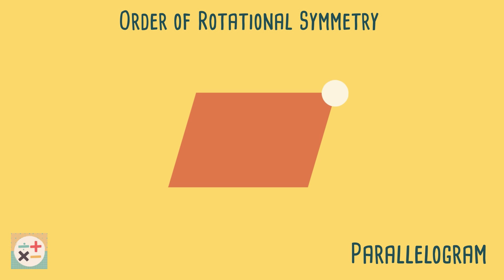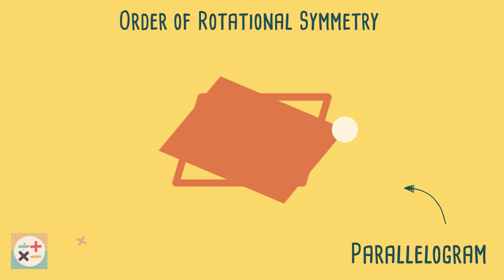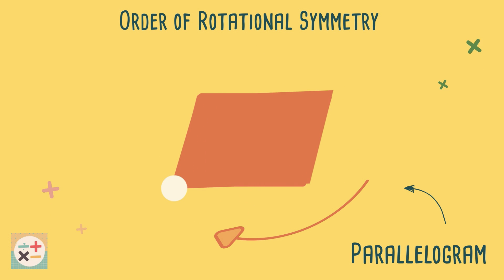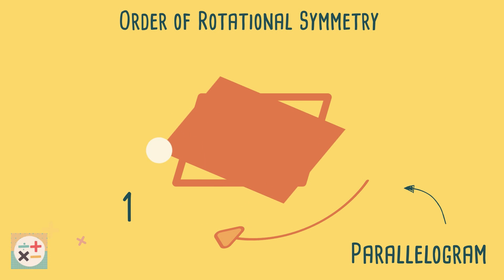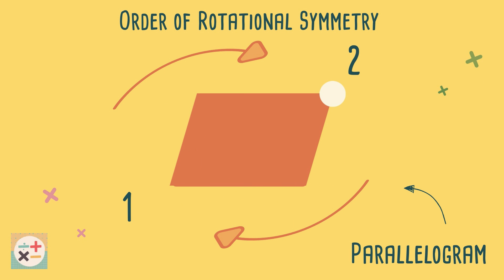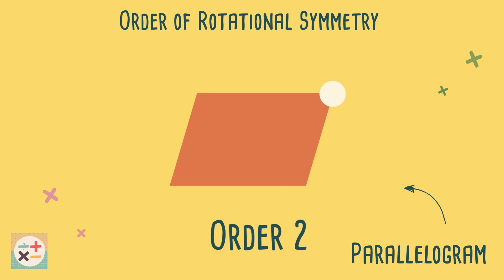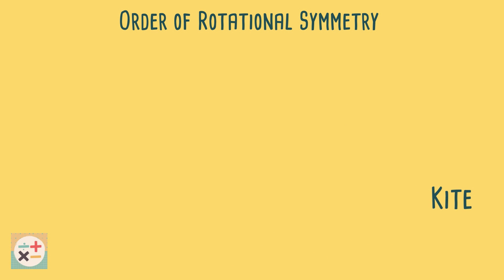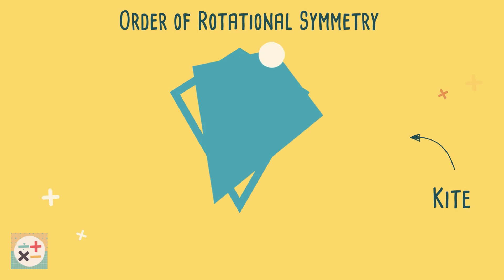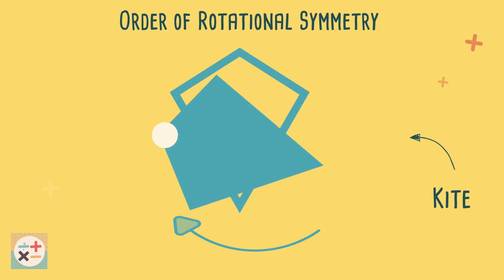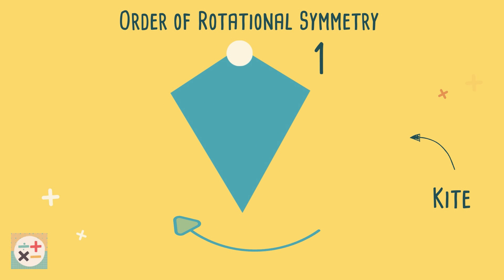Have a look at these other examples. Remember, when a shape has no rotational symmetry, it looks the same in one position — we can also say it has order 1.